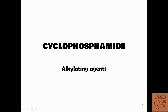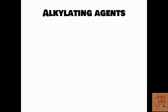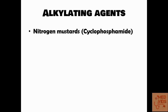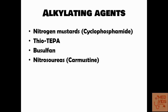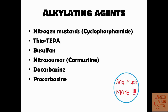This video is about cyclophosphamide and other alkylating agents used in the treatment of cancer. The various alkylating agents discussed include nitrogen mustards like cyclophosphamide and other drugs, thiotepa, busulfan, nitrosoureas like carmustine, dacarbazine, procarbazine, and more.